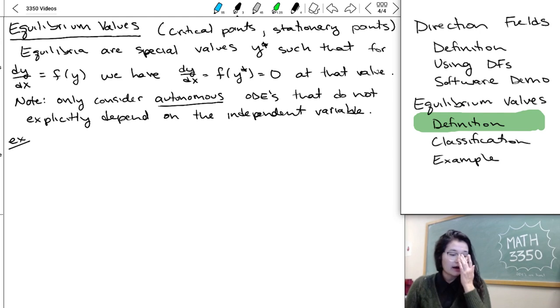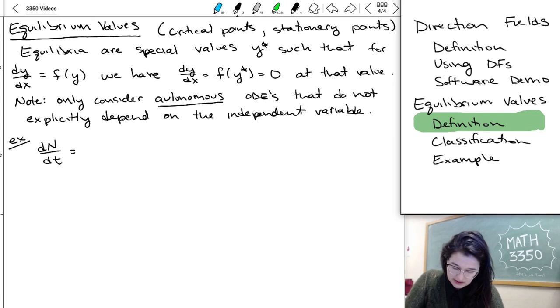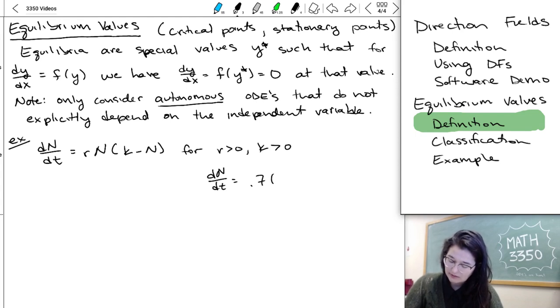So, for example, if we wanted to go ahead and consider the differential equation dn/dt equal to rn times (k minus n), for some parameters r greater than zero and k greater than zero, this is an autonomous differential equation. So r and k are random numbers. Like you could have dn/dt equal to 0.7 times n times (100 minus n). Just r in this case is 0.7, k is 100. And when I write it this way, I hope it's really obvious that there's no dependence on t, our independent variable. So this is the type of equation that we can solve for equilibrium.